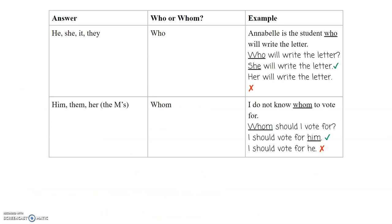Let's go through some examples. If we look on our right at our sentence about Annabelle, the sentence is, Annabelle is a student who will write the letter. We'll stop the sentence at the who and say, who will write the letter? Answer it with, she will write the letter. That does not end in an M or that one exception word, the her. We wouldn't say her will write the letter. So who is correct in the sentence at this point.